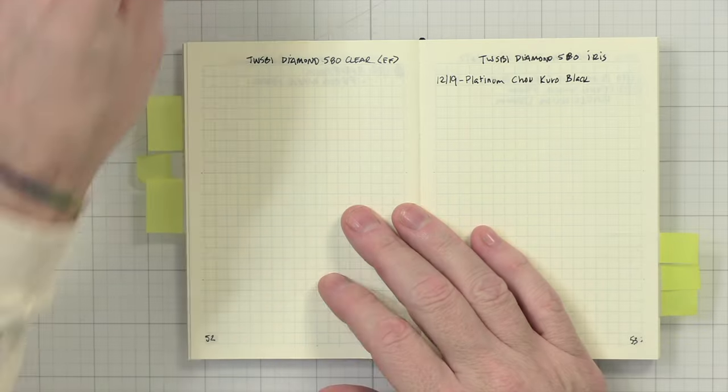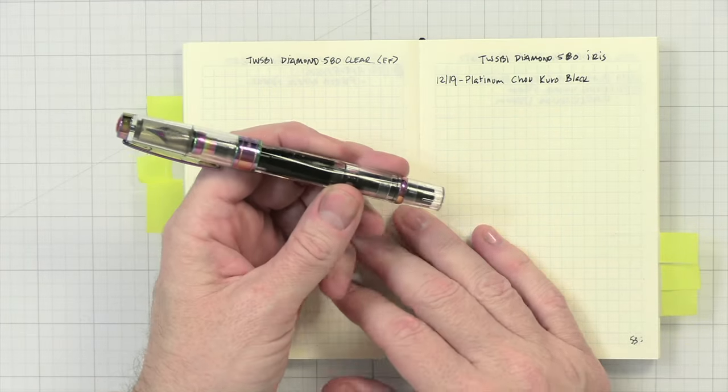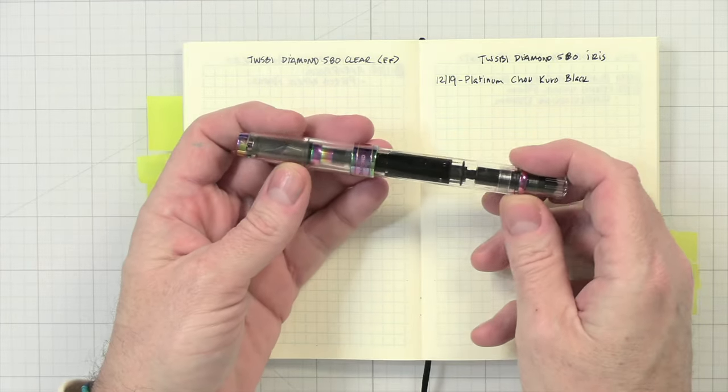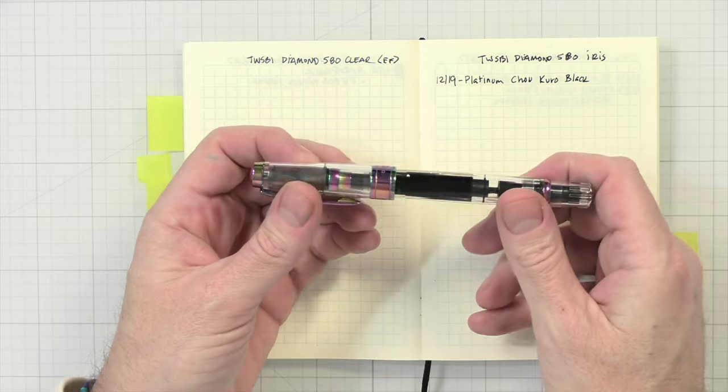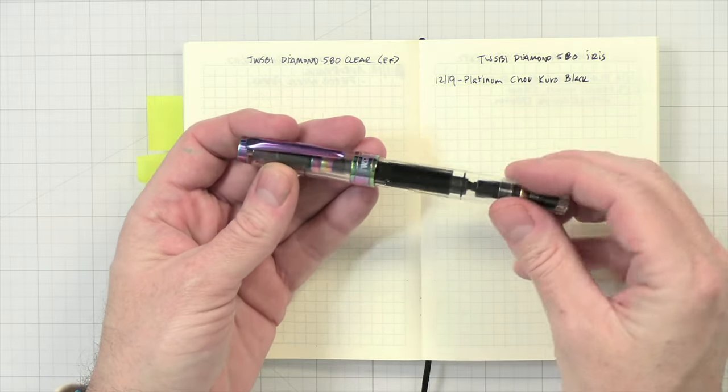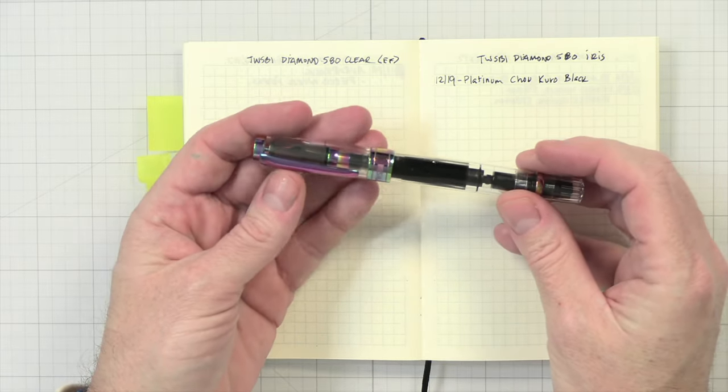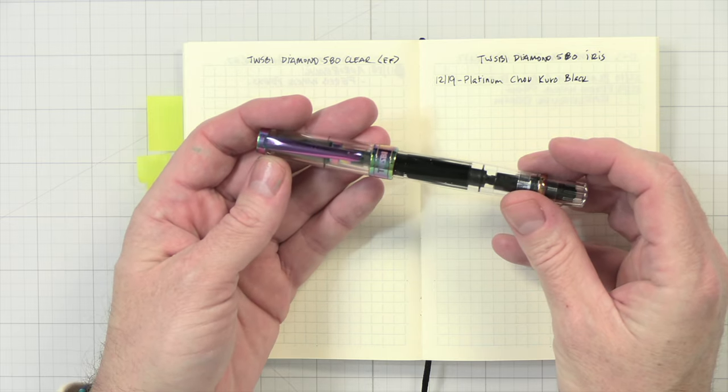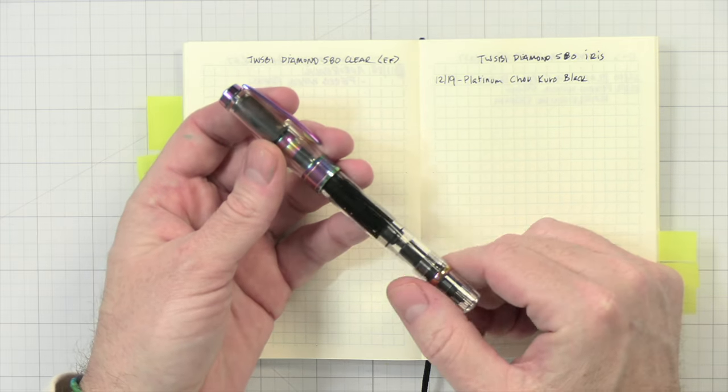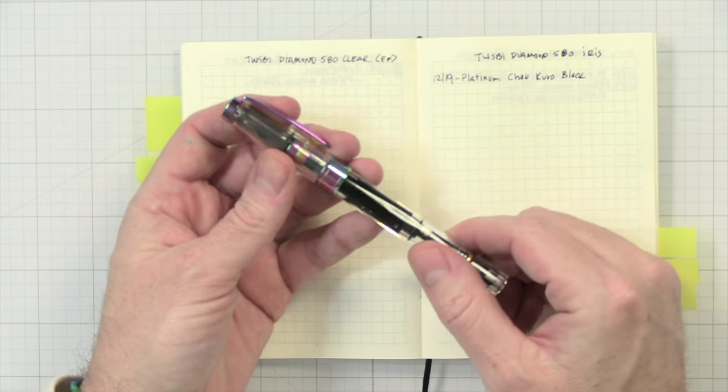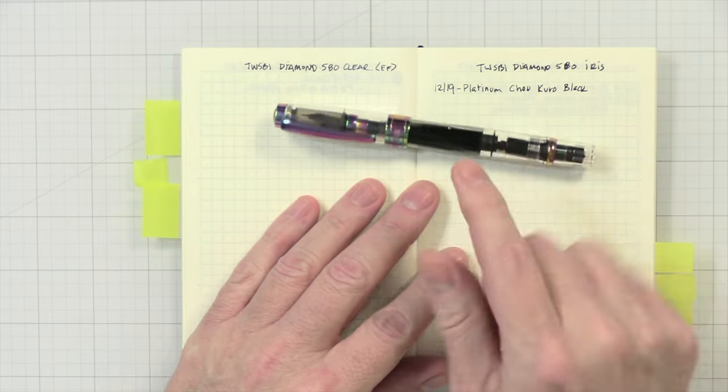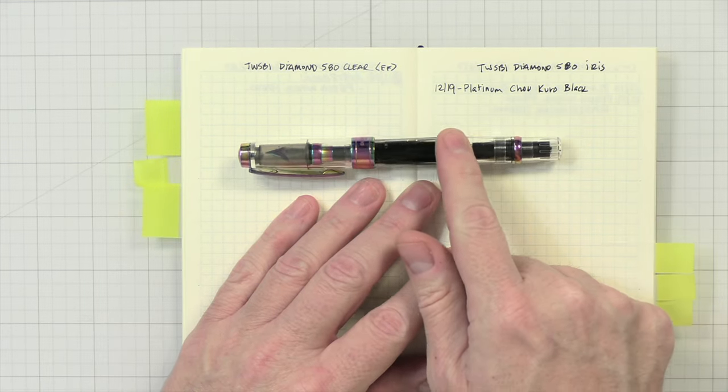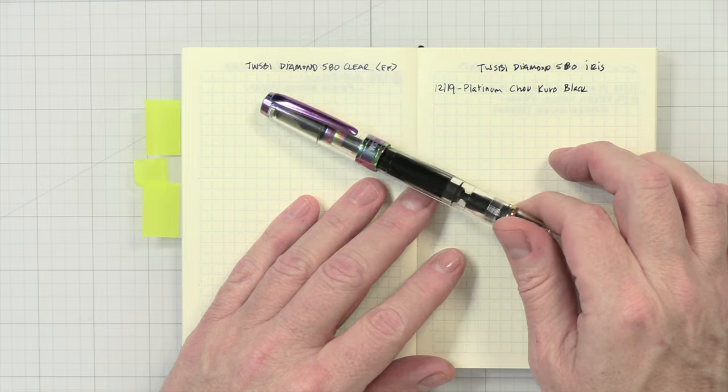Up next, we have my TWSBI Diamond 580 Iris. I keep this inked up with Platinum Chalcorro Black. This is always in this pen. I do not switch it out or I have not for a while. I just really like this pen and ink combination. This is what I do a lot of my writing with in my journals and my planners.